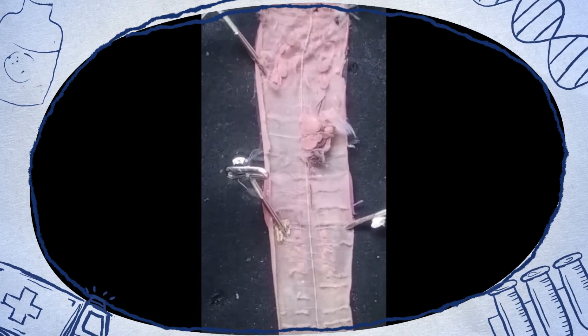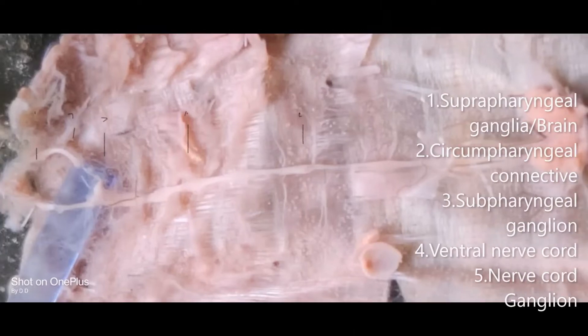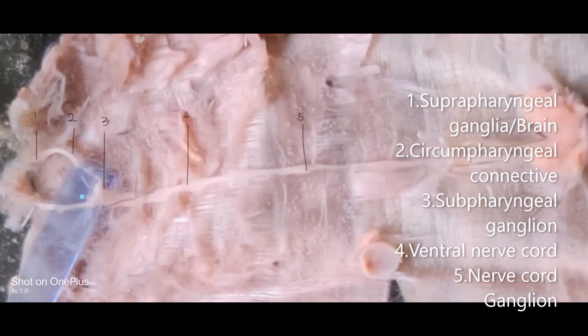Now slowly start removing the remaining parts of the digestive tract to expose the nervous system and free the nerve ring. The digestive system passes through the nerve ring.